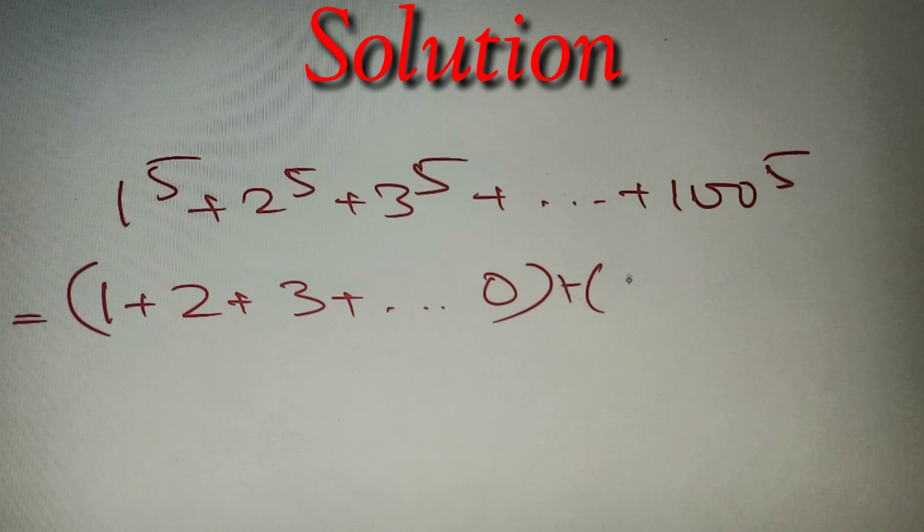The unit digit of 11 raised power 5 will be 1, 12 raised power 5 will be 2, 13 raised power 5 will be 3, and 20 raised power 5 is 0. You can see that we'll get a pattern. We'll get a set of 10, so we'll have 10 sets of this 10.